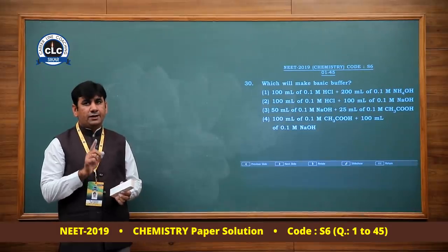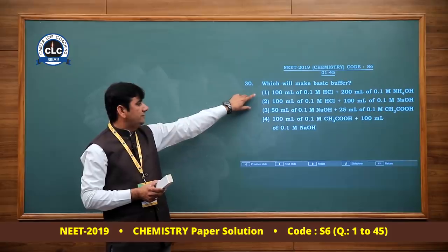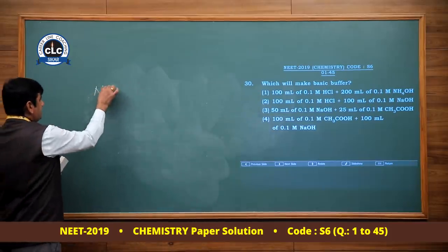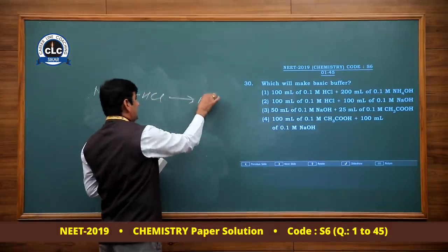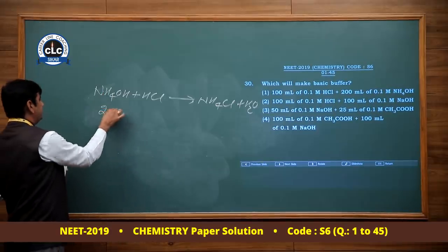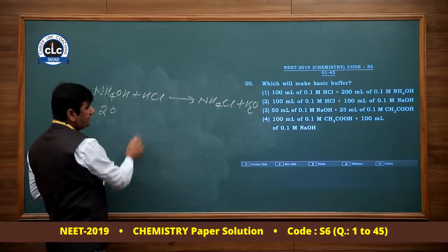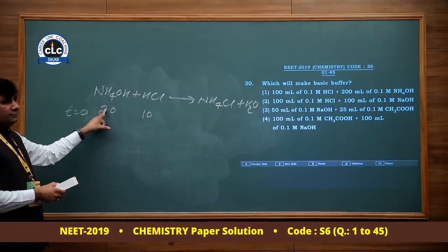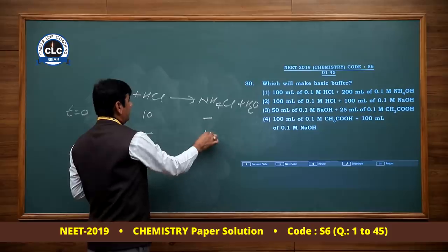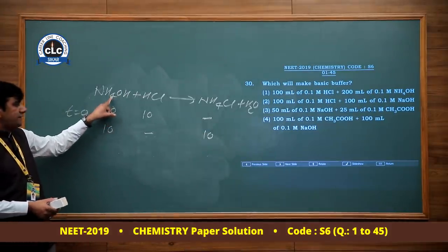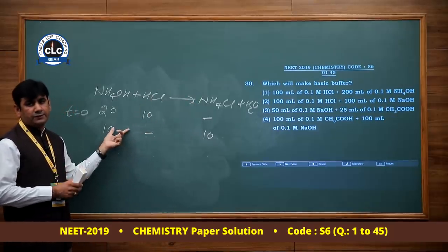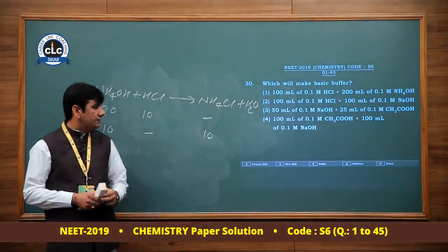Which will make a basic buffer? Option 1: 100 mL of 0.1 M HCl + 200 mL of 0.1 M NH4OH. Millimoles of HCl = 10, NH4OH = 20. After reaction, NH4OH remains with NH4Cl — this is an example of basic buffer because a weak base is present with the salt of weak base and strong acid. Option 1 is correct.